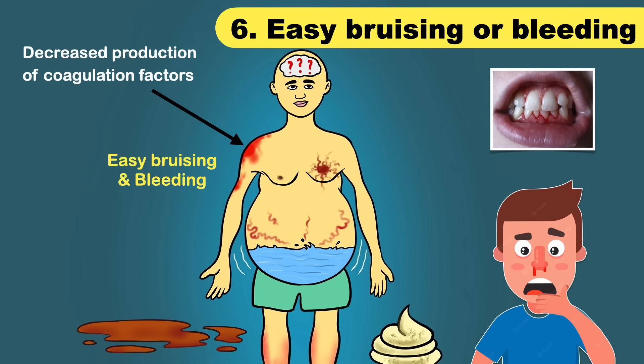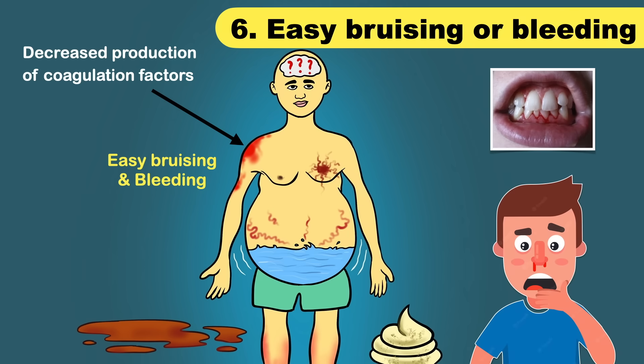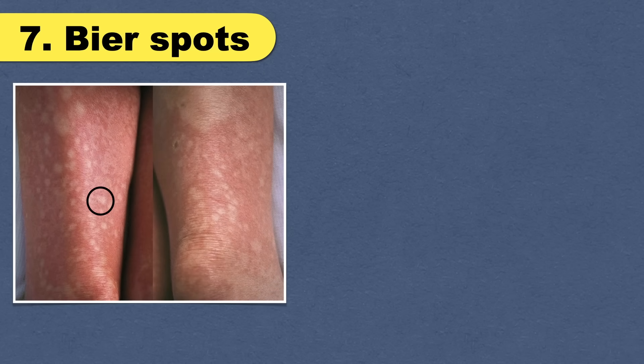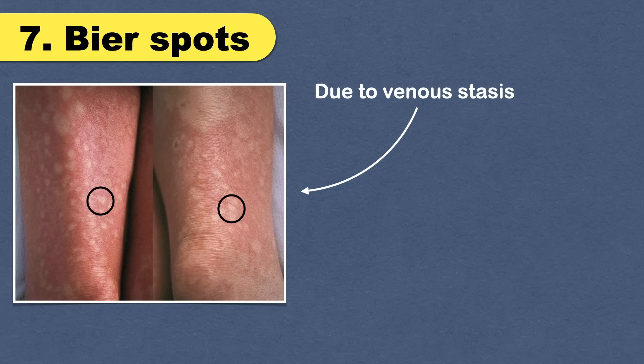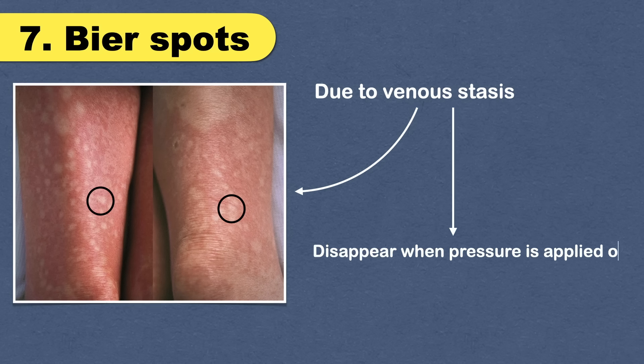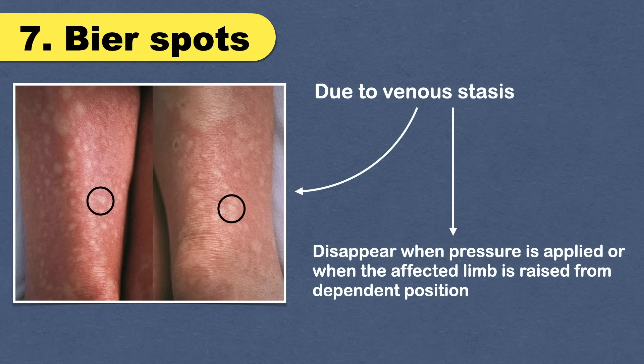The bleeding can occur from your nose or gingiva, and you may see tiny red spots on your skin. Note that there are many other causes of bleeding from the nose and gums. Sometimes you may notice small, irregular-shaped hypopigmented patches over arms and legs, considered to be due to venestasis and known as Bier spots. Their characteristic feature is that they disappear when pressure is applied or when the affected limb is raised from the dependent position.